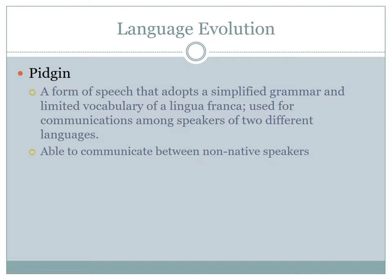A lingua franca can be when two languages come together. In the past 400 years, more than 100 new languages have been created out of the global mixing of peoples and cultures. When people speaking two or more languages come into contact and don't share a lingua franca, they combine parts of their languages to form a simplified version with limited vocabulary — that is called a pidgin language. A pidgin language adopts a simplified grammar and limited vocabulary of a lingua franca for communication among speakers of two different languages.